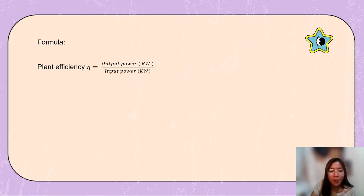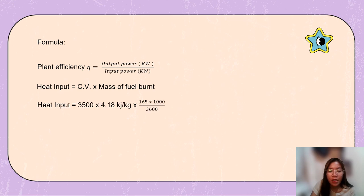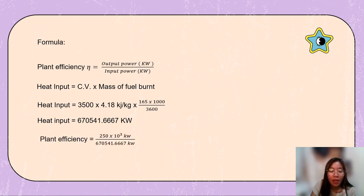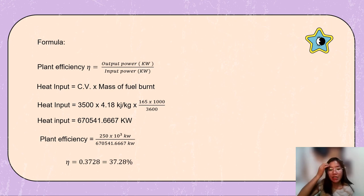To find the overall efficiency, the formula is: plant efficiency equals output power over input power. Heat input equals calorific value times mass of fuel burned: 3,500 × 4.18 kJ/kg × (165 × 1000 ÷ 3600). The heat input equals 670,541.667 kilowatts. Therefore, plant efficiency equals 250 × 10³ ÷ 670,541.667, giving a plant efficiency of 0.3728, or 37.28%.